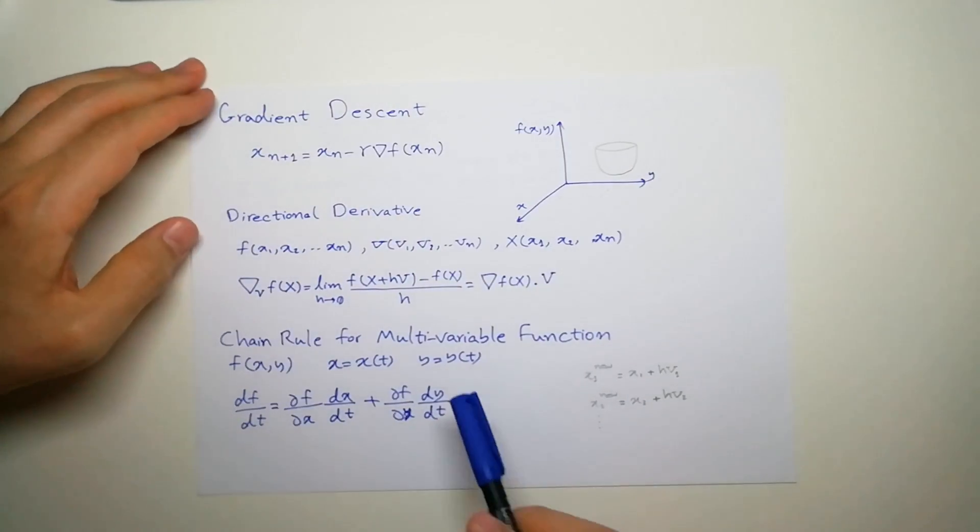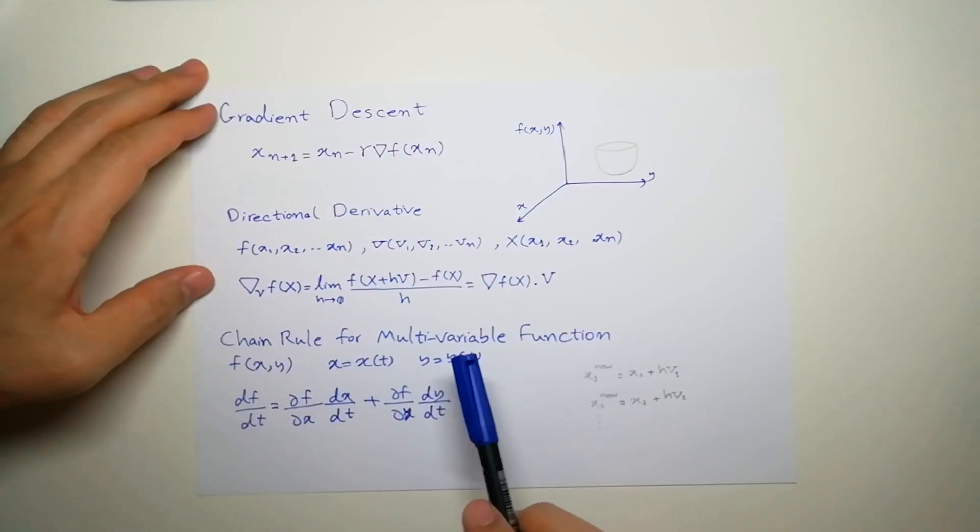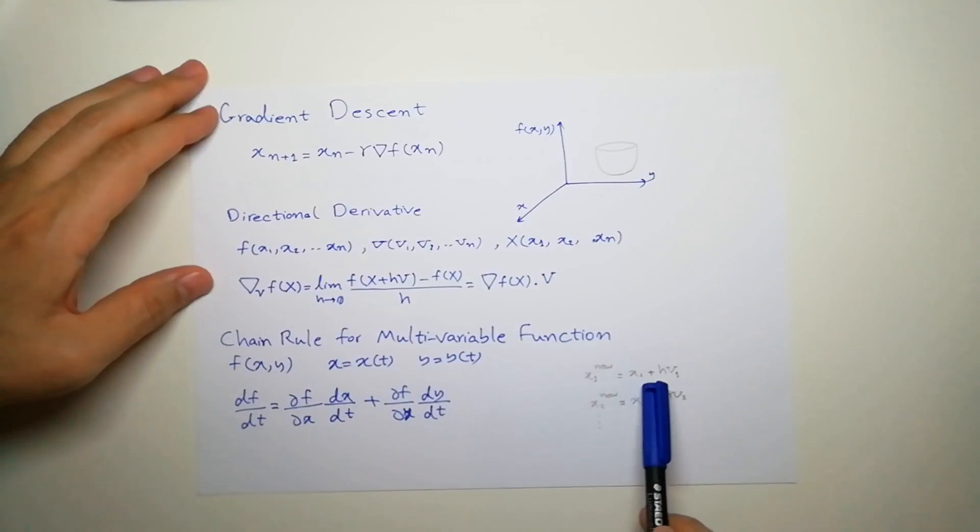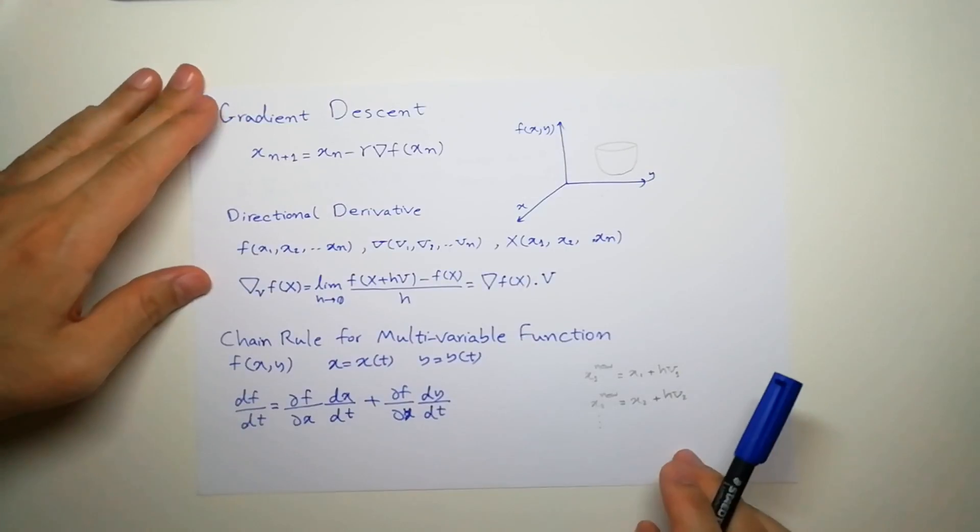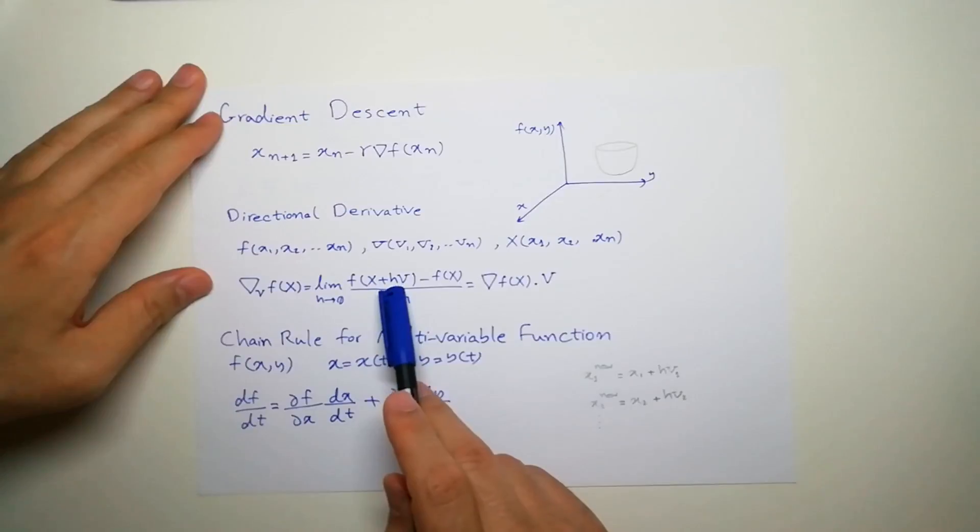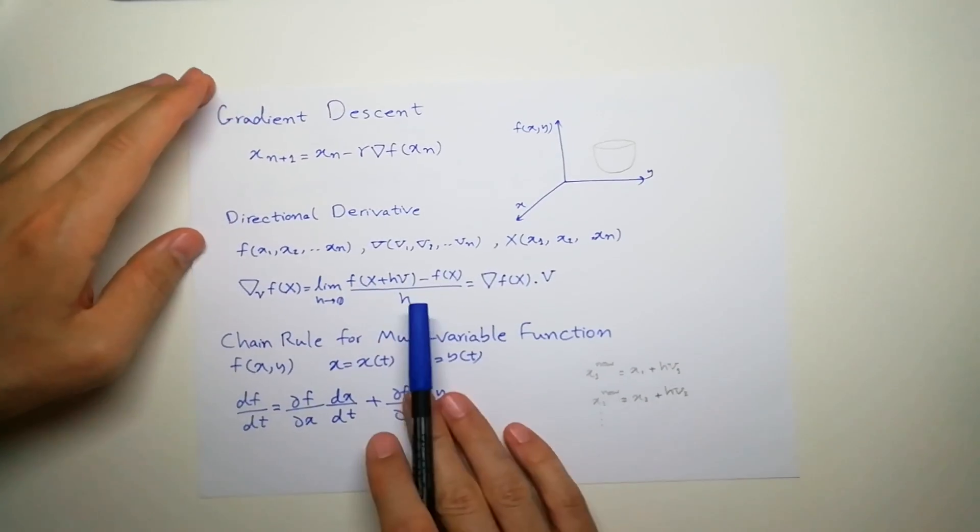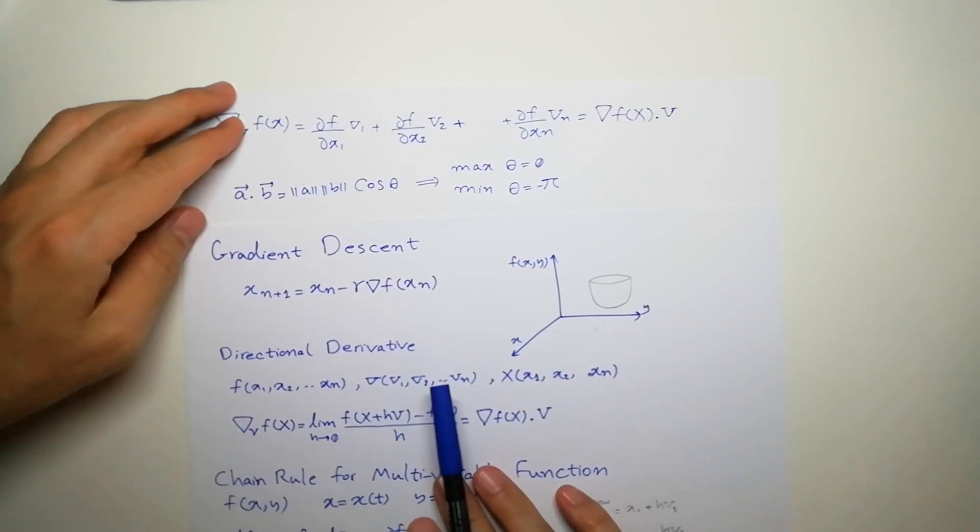So here, our x(t) function and y(t) function are actually x plus h times v1 and h plus v2, and so on for every dimension until n that we have. So if you use the chain rule, you can see the derivative of f.